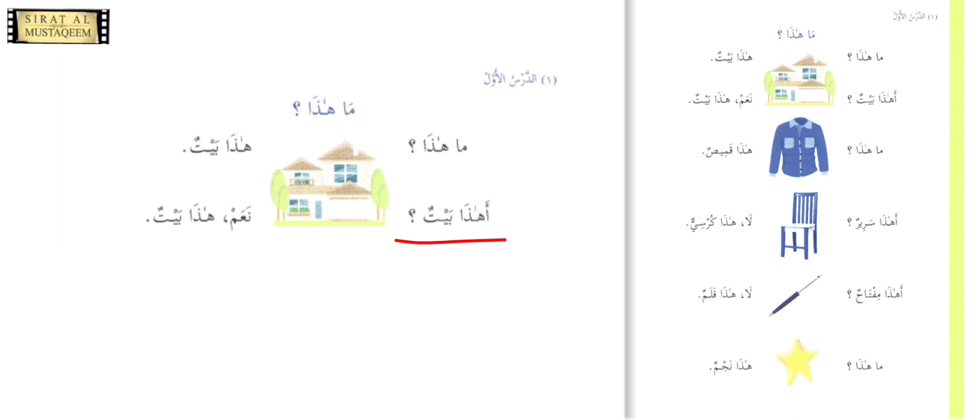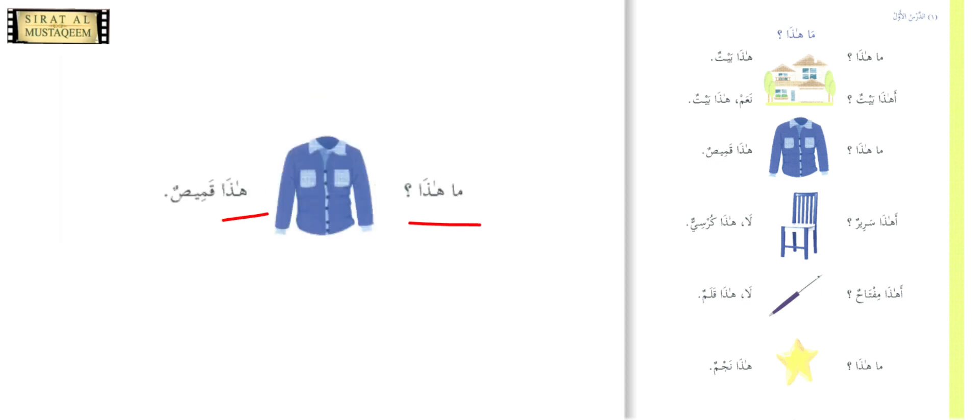So here it is asking: 'is this a house?' The answer — there is a photo of the house — 'naam, haza baitun' — yes, this is a house. Next: 'ma haza?' — what is this? You have to answer: 'haza qamisun' — this is a shirt. You have to memorize this vocabulary.